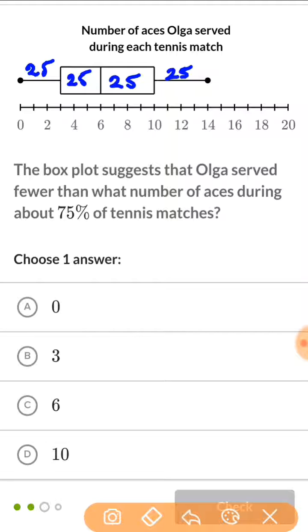So the box plot suggests that Olga served fewer than what number of aces during about 75% of tennis matches. So fewer than what number of aces during about 75%. Well, we know that 75% would be 25, 50, 75, which would be right here. So essentially, they're asking you, where is Q3? That's basically what they're saying. Because it said that it should be fewer than what number of aces during 75% of the matches. It would be fewer than 10. Because 10 represents 75%. So if it's fewer than 75%, it must be fewer than 10.